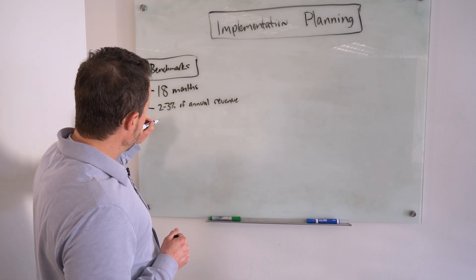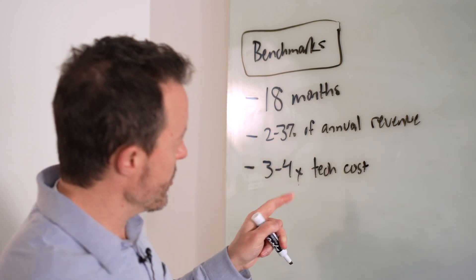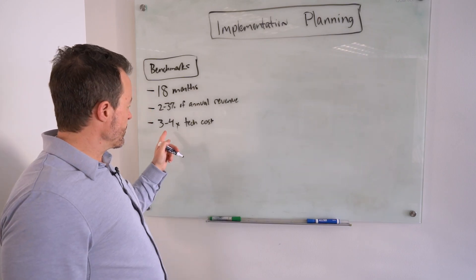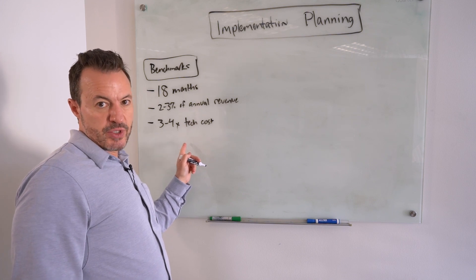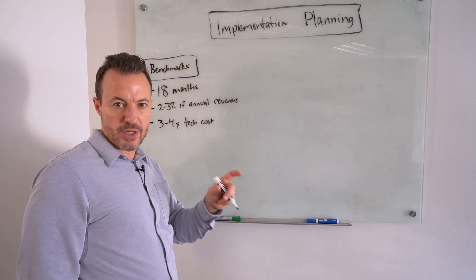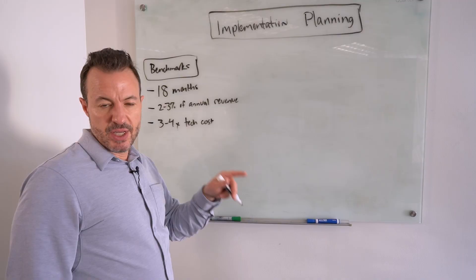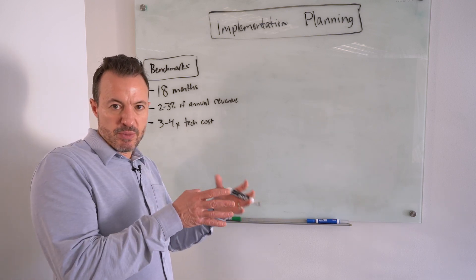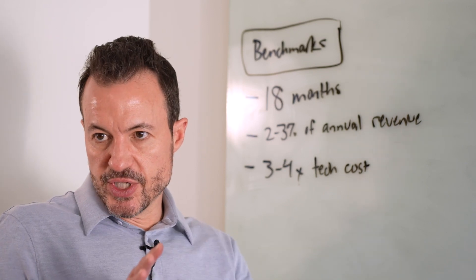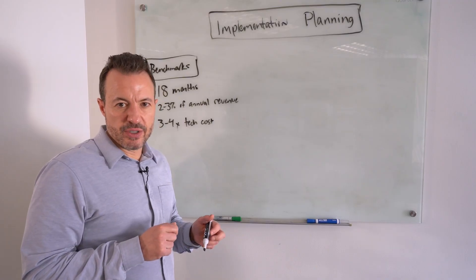Another useful average cost metric is to look at three to four times your technology cost. In other words, whatever you're spending on software — take three to four times that and that's typically your total cost of ownership. Keep in mind, this metric was largely based on the old on-premise model. With most vendors now moving to a subscription model, you may need to translate the subscription cost into an on-premise equivalent and then multiply by three to four times to get your total cost of ownership.